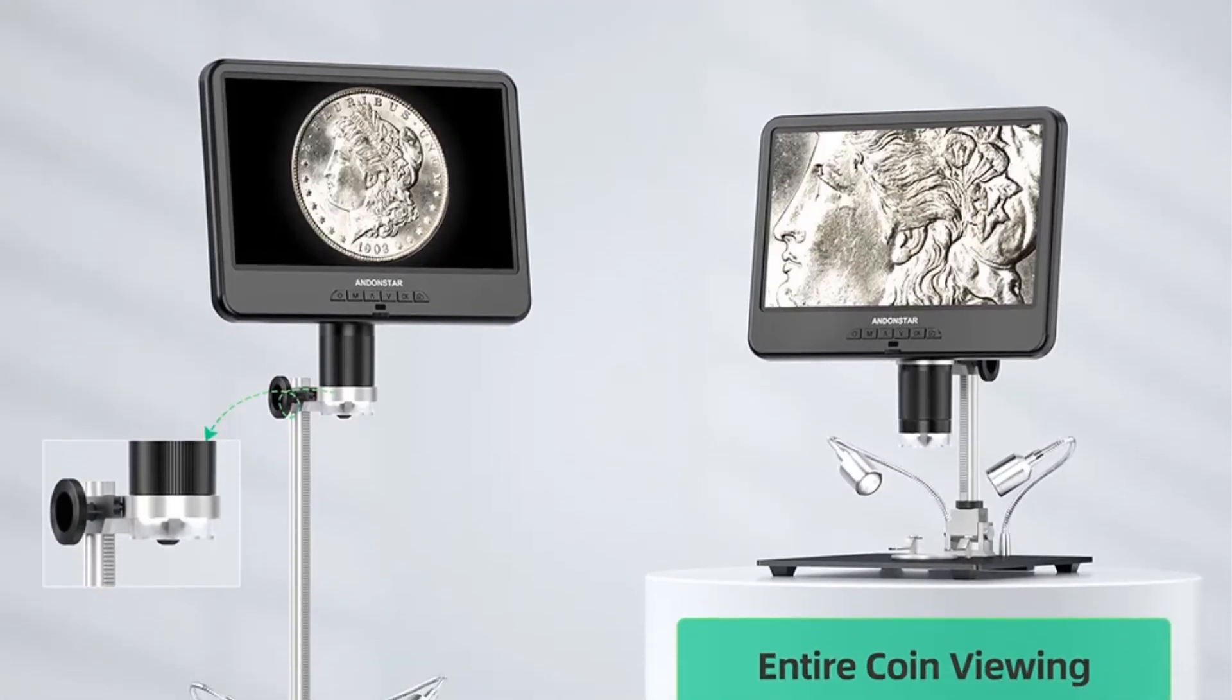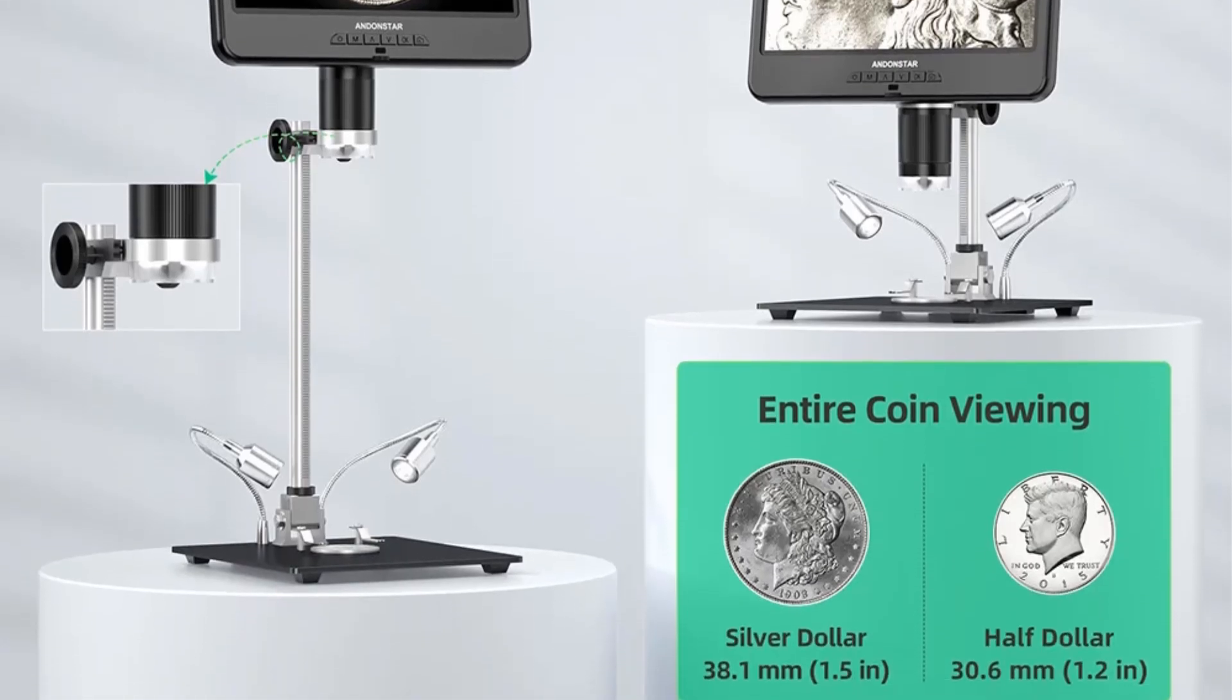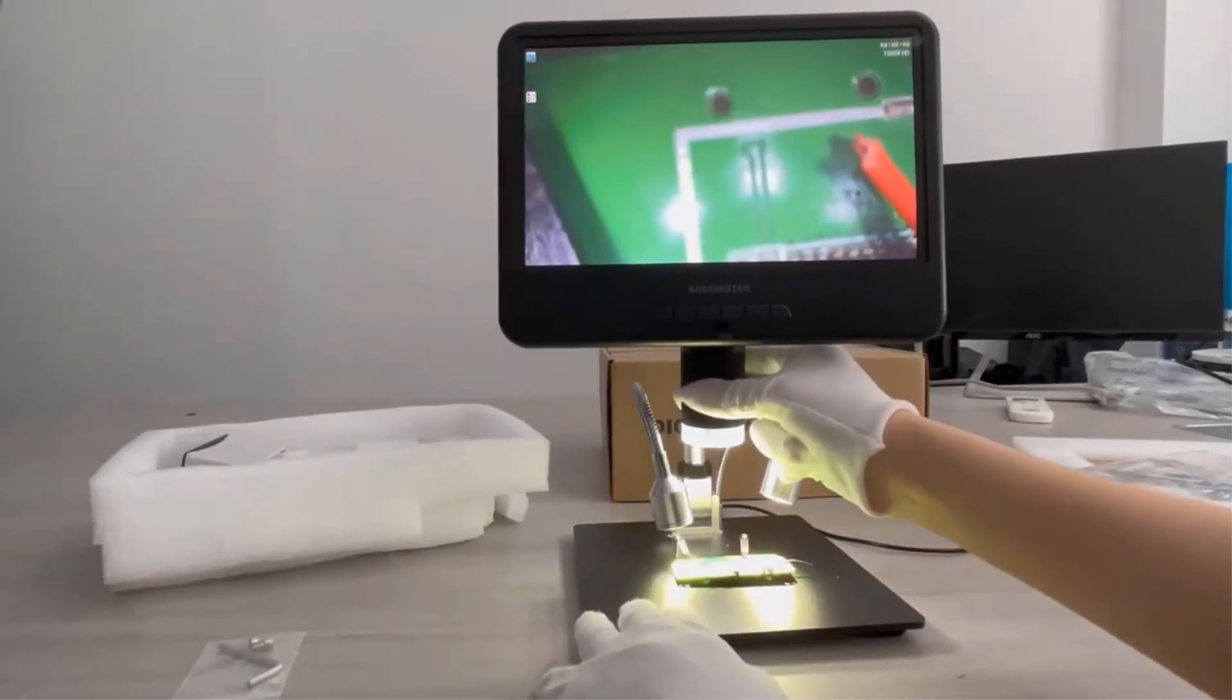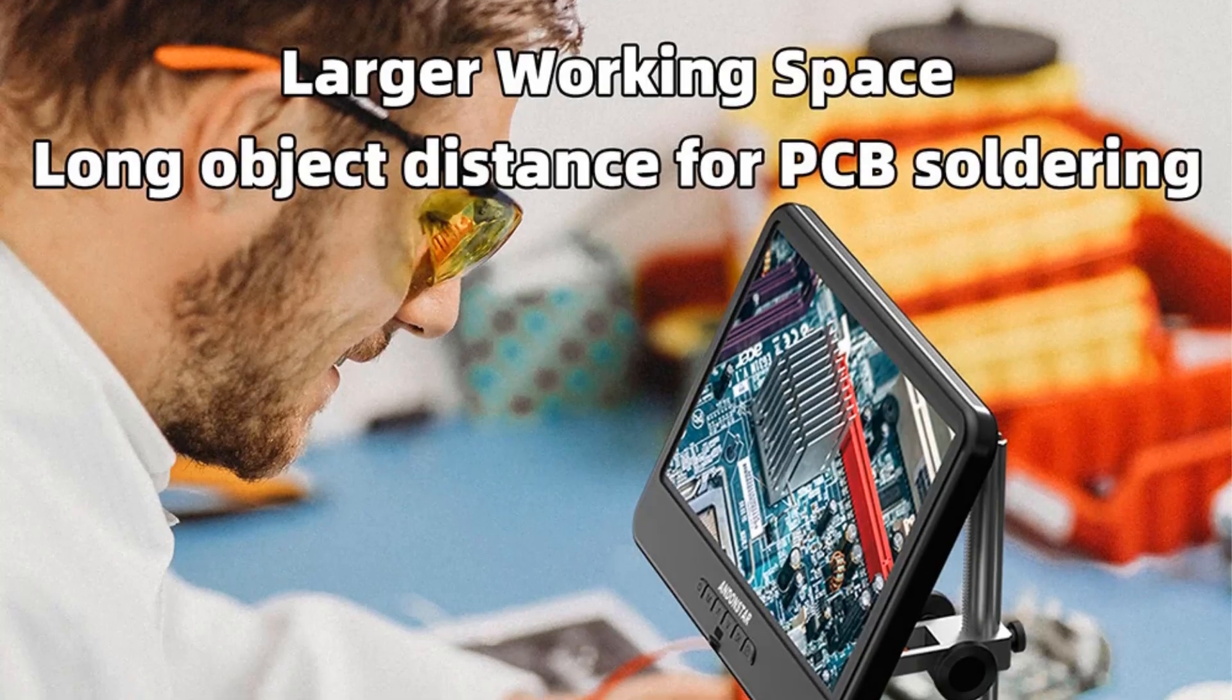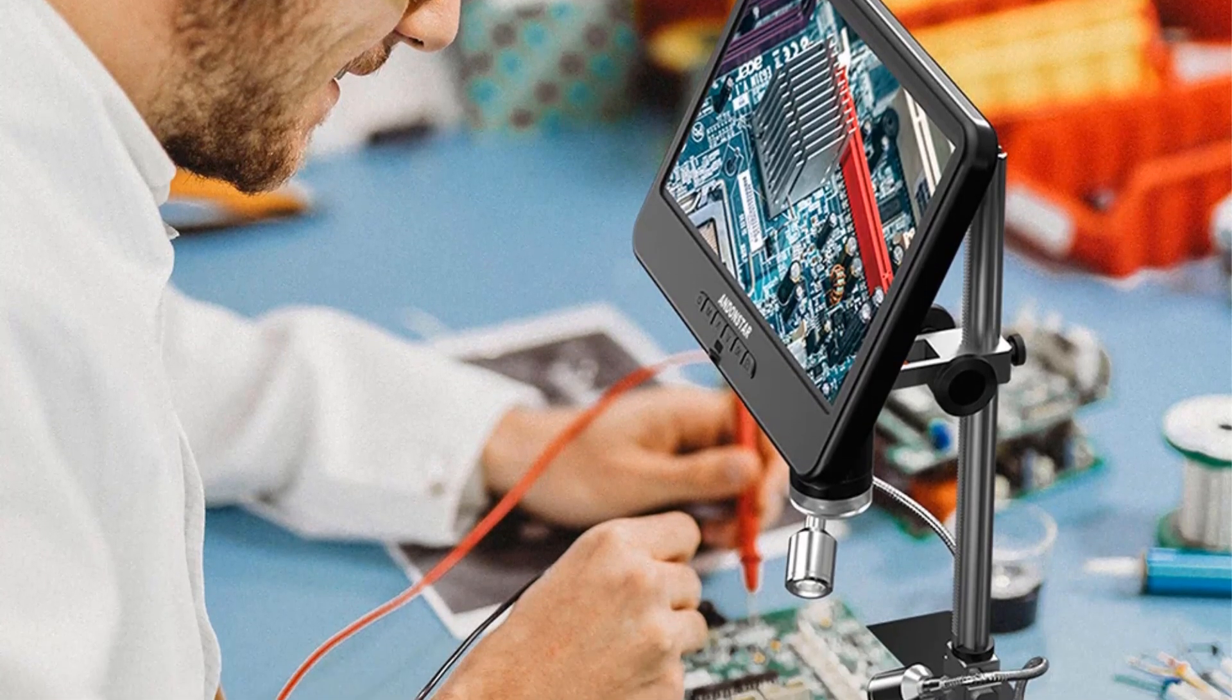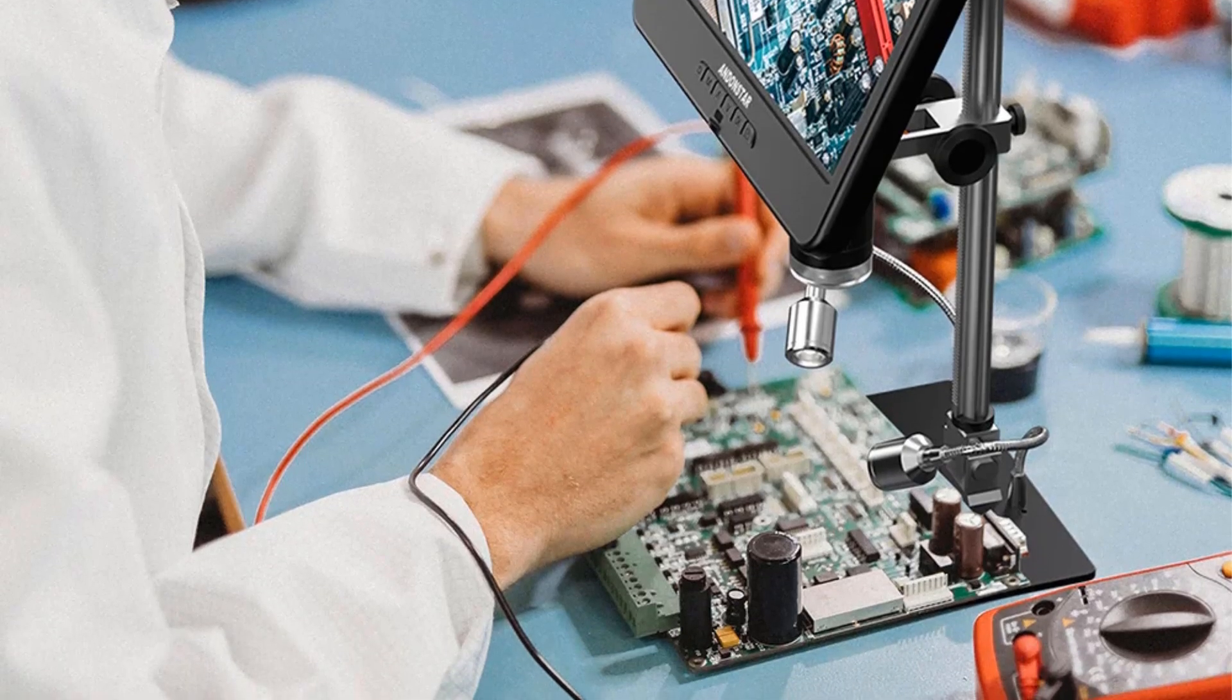The device operates on a USB 5V DC power source and comes with dual-fill lights for enhanced visibility. Certified by CE, FCC, and ROHS, the AD210 is constructed from durable metal and includes a range of accessories such as a metal stand, remote control, and user manual. It supports multiple languages, making it user-friendly for a diverse audience. The package weighs approximately 1.85kg and offers an efficient solution for detailed inspections and monitoring.